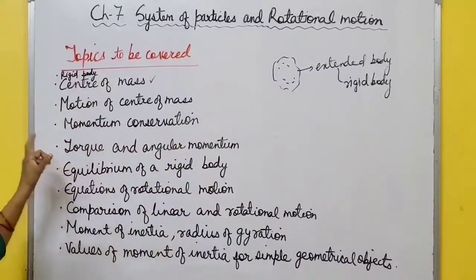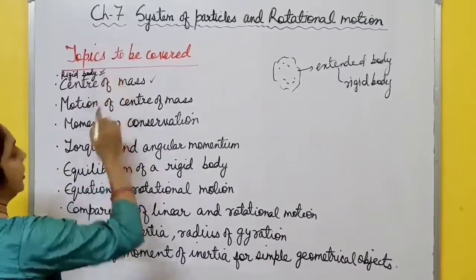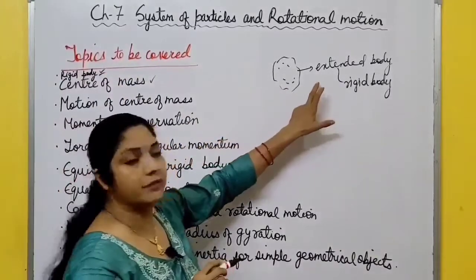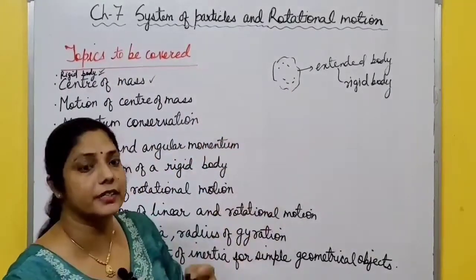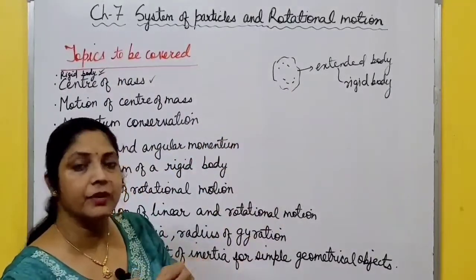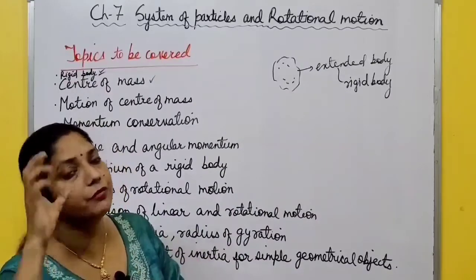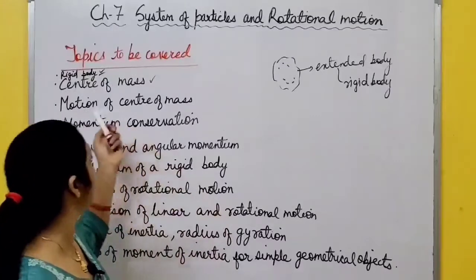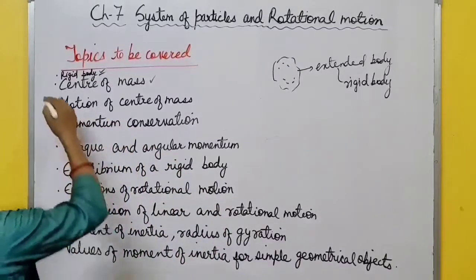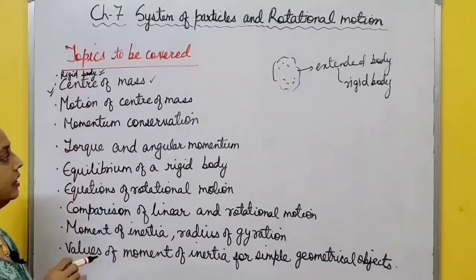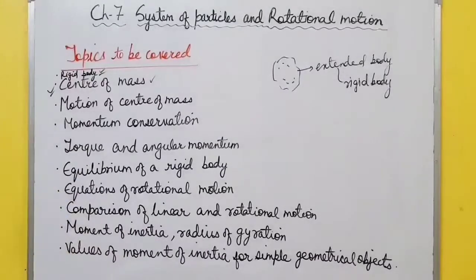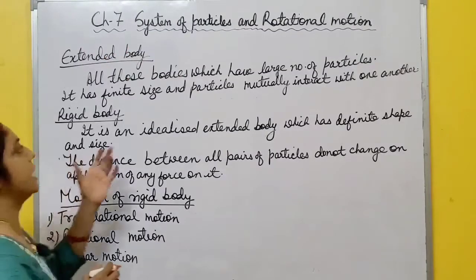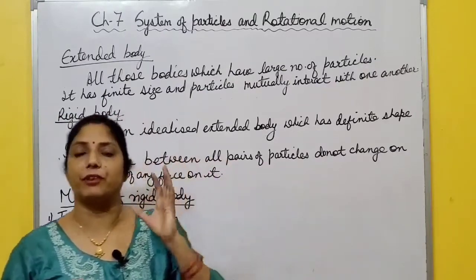We'll cover all these topics and discuss each one by one, starting with rigid body. In this chapter we mainly discuss about rigid body and their motion. The chapter name is System of Particles and Rotational Motion. System of particles means extended body.